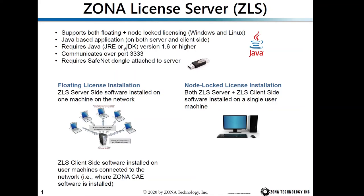To run ZLS, you need Java version 1.6 or higher, and you also need a dongle attached to the server. If you have a floating license, you can install the ZAERO software on many workstations. When you run ZAERO, it will contact the server to check out one token. When the job is finished, it will check the token back to the server.